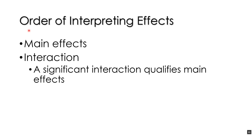Now let's talk about the order of interpreting effects. You have the means from your experiment, you have a bunch of F statistics and p-values, and you know what's significant. How do you actually interpret and talk about what's important from the results?